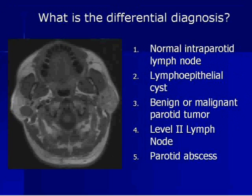So what's the differential here? Is it a normal intraparotid lymph node? Is it a lymphoepithelial cyst? Is it a benign or malignant parotid tumor, a level 2 lymph node, or a parotid abscess?